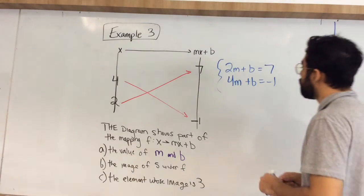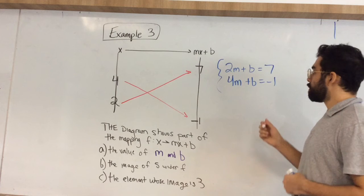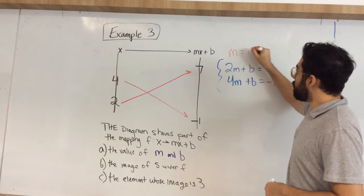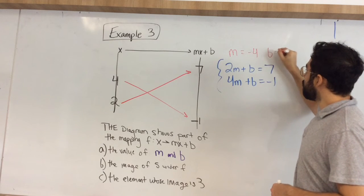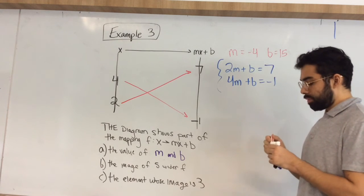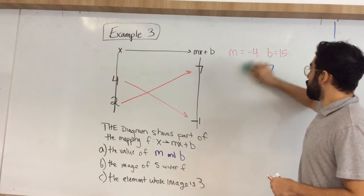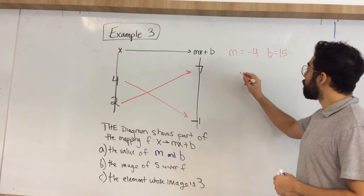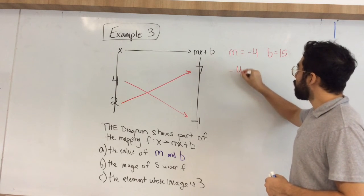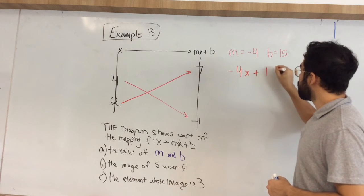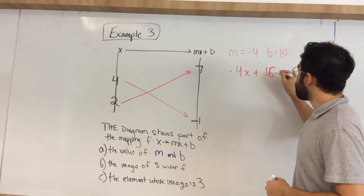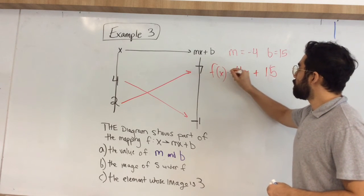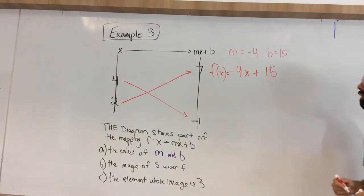All right, when you guys do simultaneous equations, which I'll leave you guys to do, but you will end up getting m is equal to negative 4, and b is equal to 15. At this point, we know what we need to input for the function. So we have negative 4x plus 15. So f of x is equal to negative 4x plus 15.